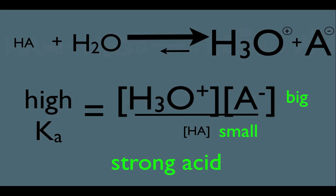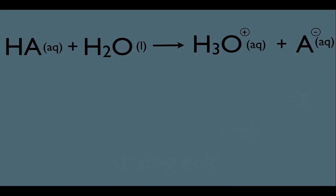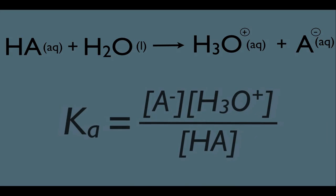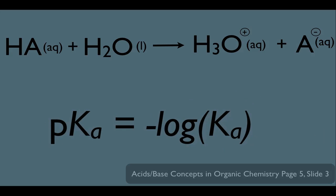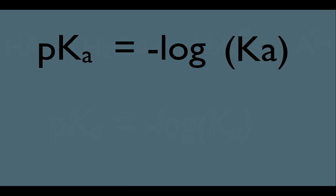Now, there's something else I want to show you here. Ka is not the only tool we have to judge relative strengths of acids. Sometimes it's more convenient to look at the pKa of the acid. And by definition, pKa is this: the pKa is equal to the negative log of the Ka. So basically, p just means negative log of.